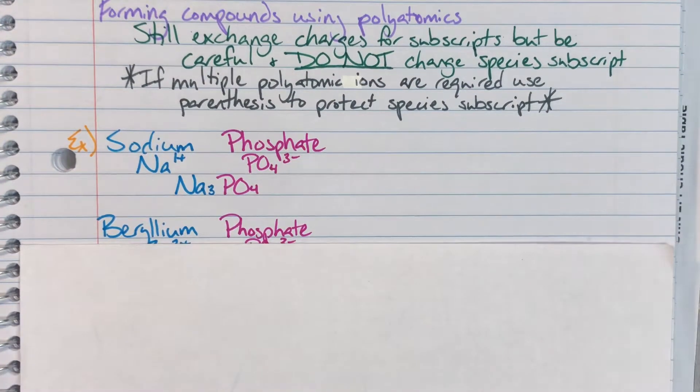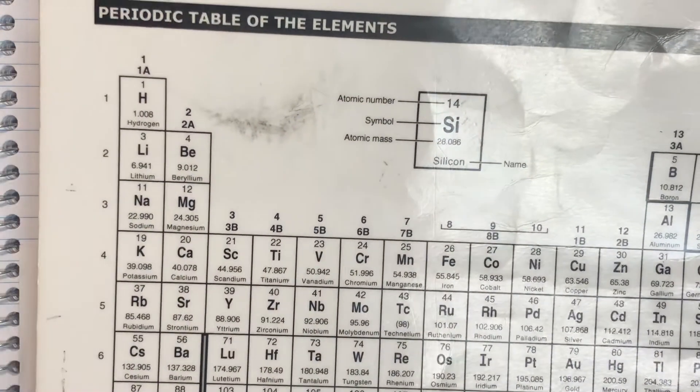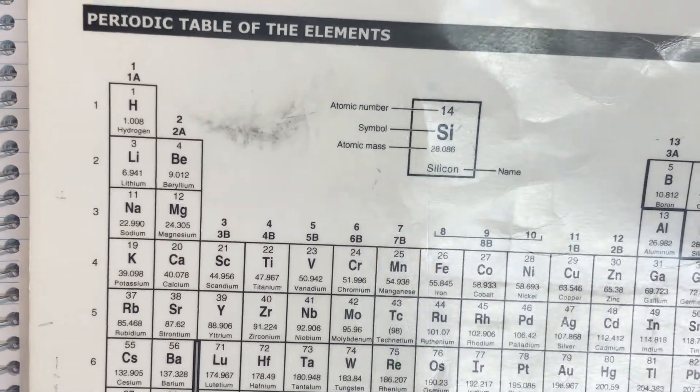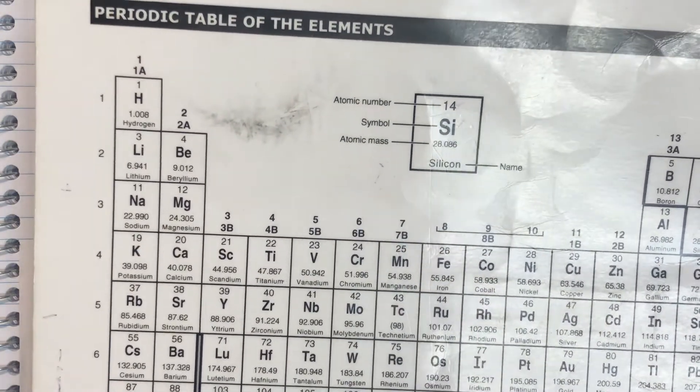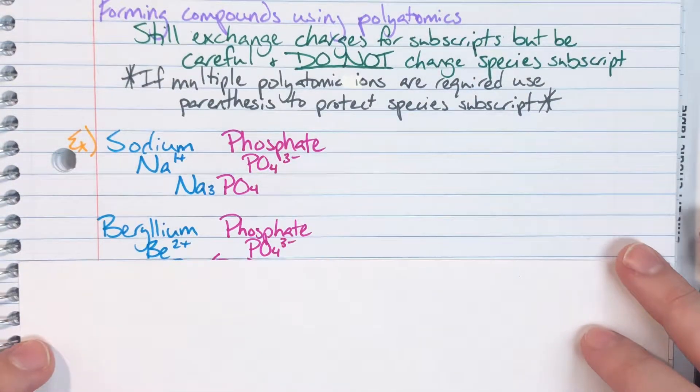So we're going to go ahead and we're going to find beryllium. Beryllium is going to be on the periodic table. It is in column two, which means that I'm going to have two valence electrons, which means I'm going to give away those two valence electrons rather than steal six to complete my octet. Since I'm giving away two valence electrons, my charge will be positive two.